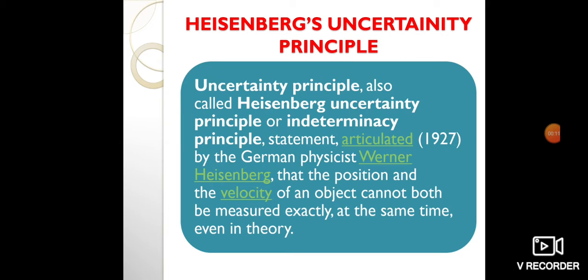Uncertainty Principle, also called Heisenberg's Uncertainty Principle or indeterminacy principle, statement articulated in 1927 by the German physicist Werner Heisenberg, that the position and the velocity of an object cannot both be measured exactly at the same time, even in theory.